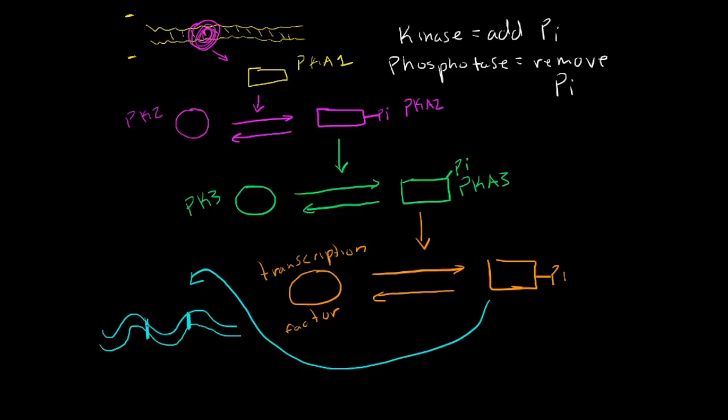The site that it wants to transcribe is right here, and now that it's been activated by adding a phosphate group to it by this protein kinase 3, it will be able to bind to this site with more affinity. So we will go back to orange to show the color of this. It will come in here and it will bind to its site to increase the transcription of this DNA.